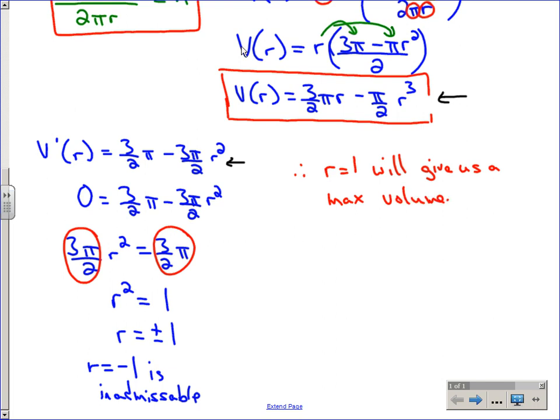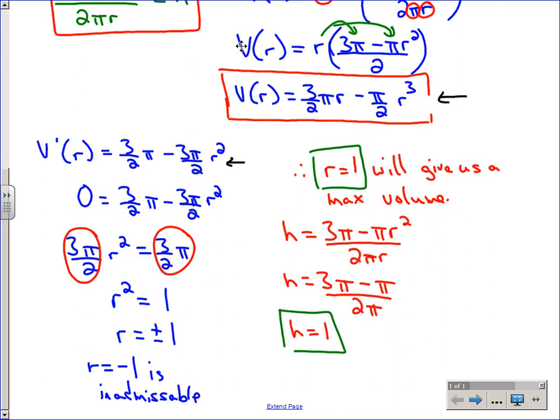We found our r value. The question asked for the height as well. The height was equal to (3π - πr²)/(2πr). If I substitute 1 for r, we would get 3π minus π divided by 2π, so 2π over 2π—h is just 1.